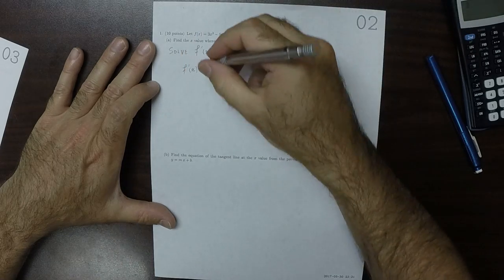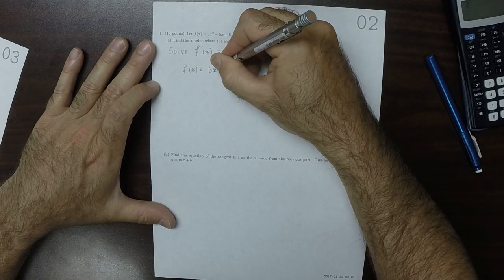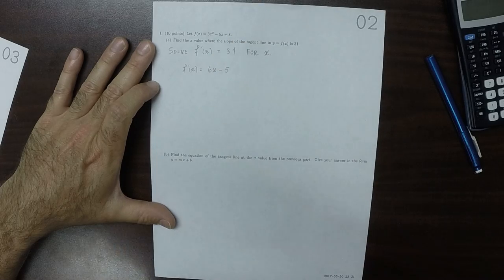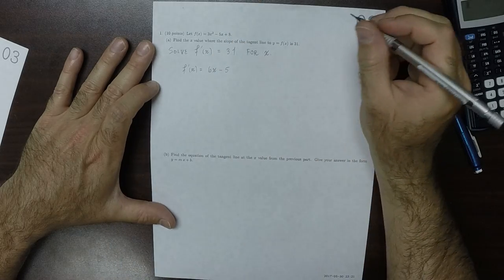So the derivative is 6x minus 5, and we want to solve that equal to 31.